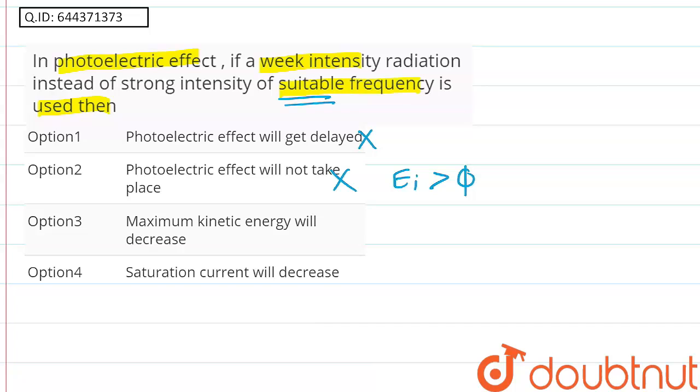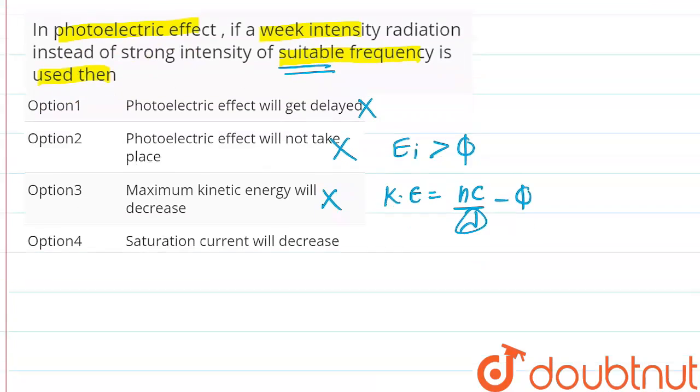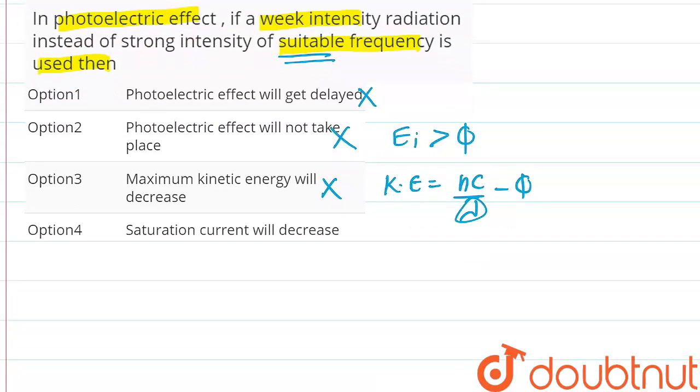Option three is maximum kinetic energy will decrease. This is also a wrong statement because kinetic energy is equal to hc upon lambda minus phi. It depends on the wavelength and not the intensity.